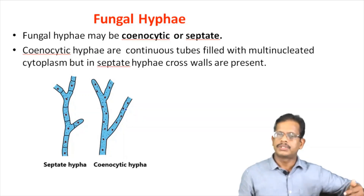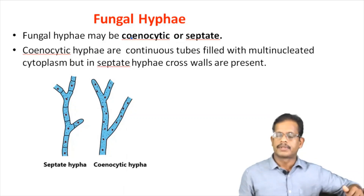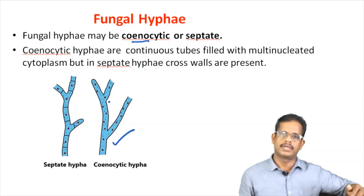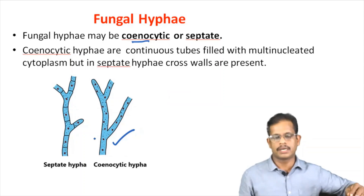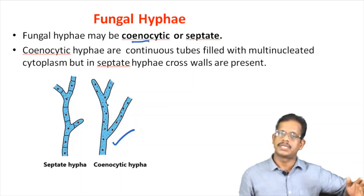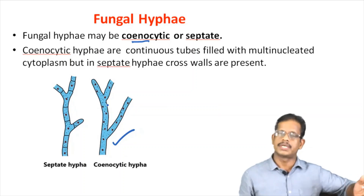There are two types of fungal hyphae. One is called aseptate or coenocytic hypha. This is a tube-like structure that consists of a large number of nuclei — a multi-nucleated condition with no cross walls.